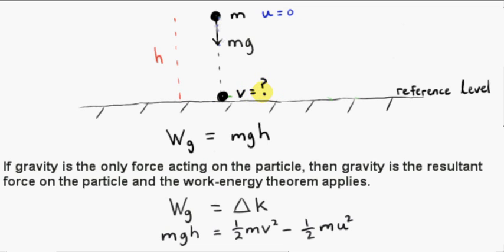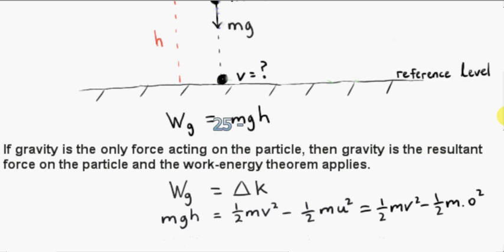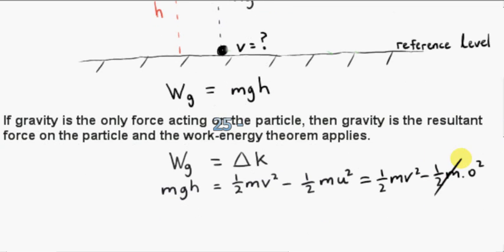And v is going to be the speed of the particle just before it hits the ground. So now we can determine v. We plug zero in for u. So the kinetic energy at the start is zero. We can see that v doesn't depend on m. m cancels out from both sides. So we get gh equals a half v squared. So v squared is 2gh. Or v equals the square root of 2gh.